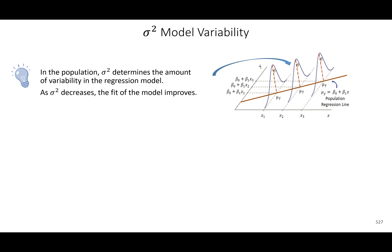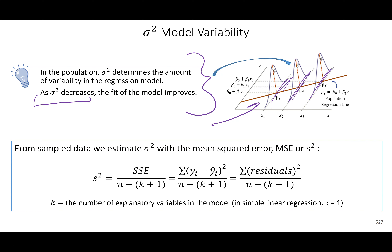We don't know for the population how much it varies from the population line, but we can estimate it. As variability decreases, points get tighter and closer to the line — this is good. The tighter the points are to the line, the better it is at making predictions. High variability, where points are all over the place, makes it really hard to have dependable predictions.